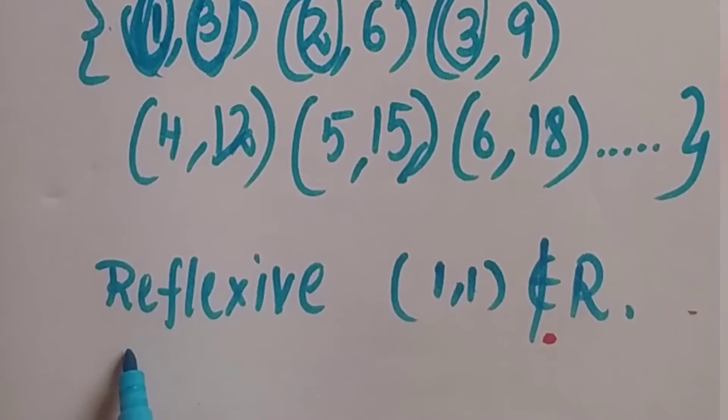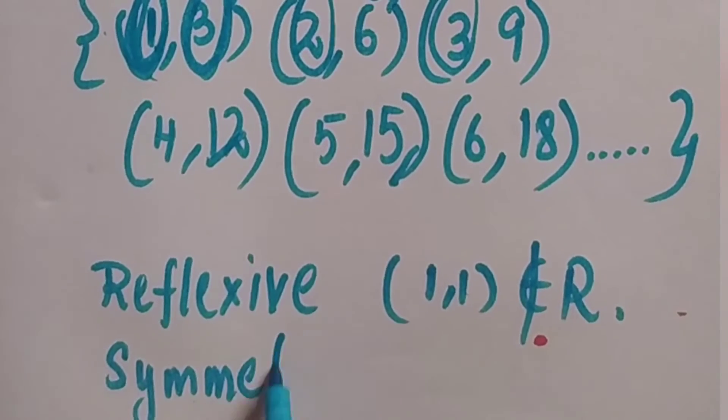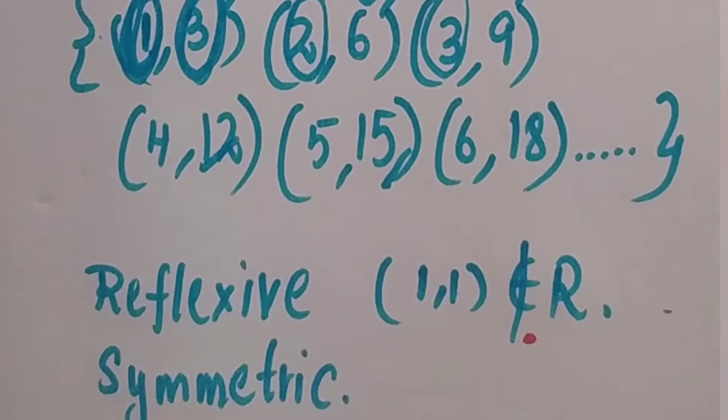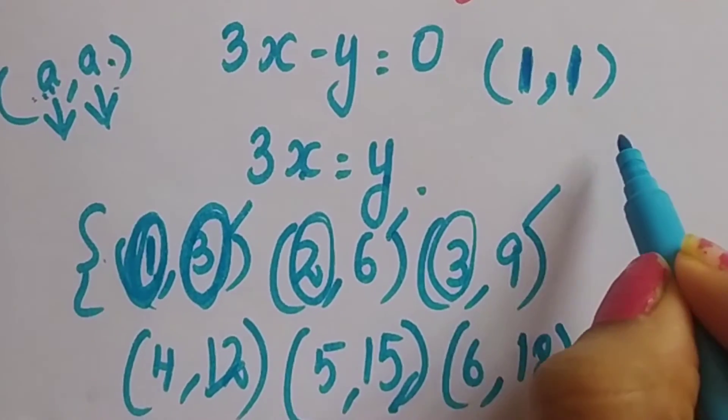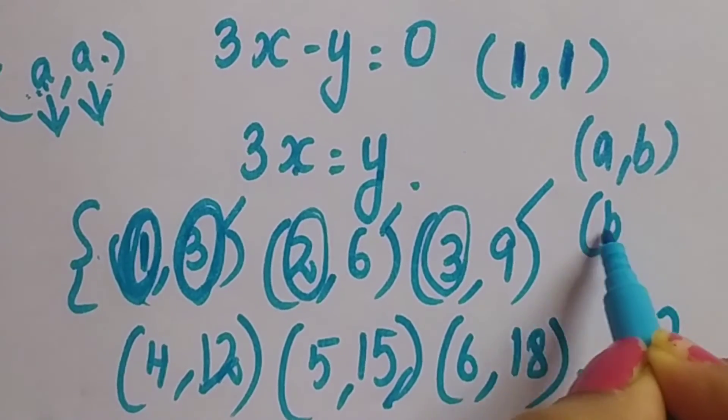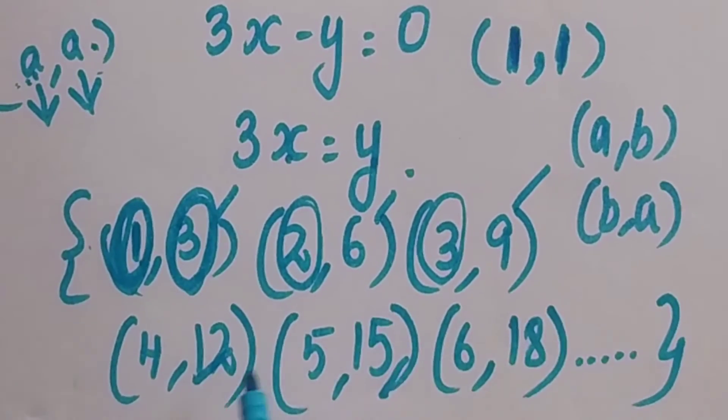Now the next thing is symmetric. We have to check if it is symmetric. Now what is symmetric? If a, b is there, then b, a should also be there.